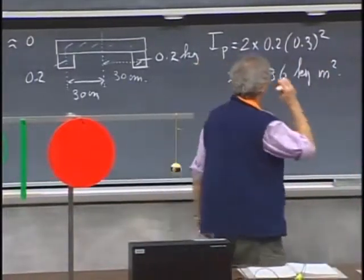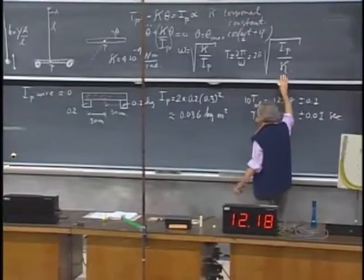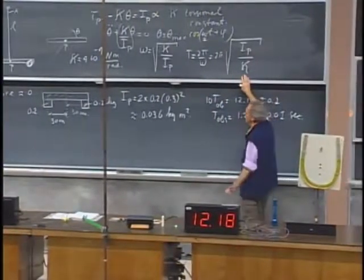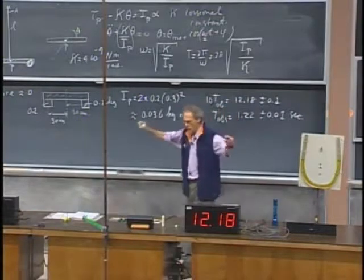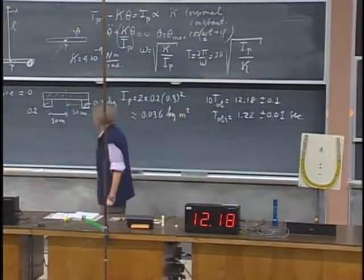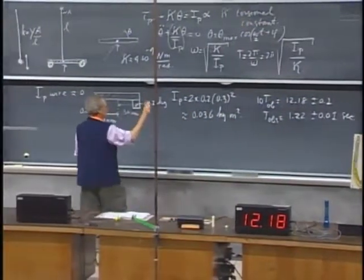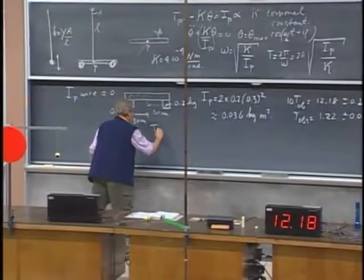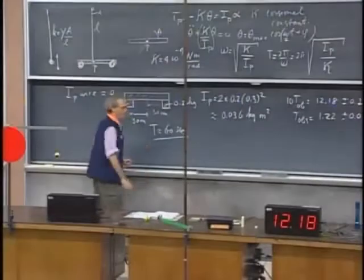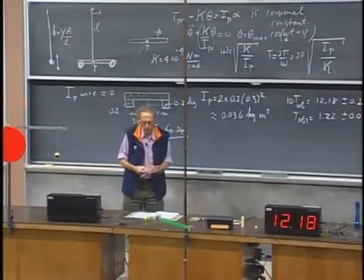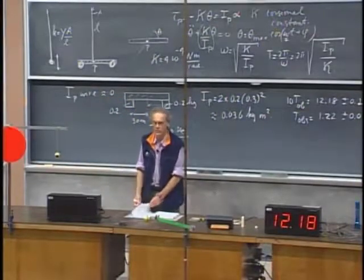And so when I use that into our equation, so I know now what kappa is, at least I have a reasonable idea what kappa is, and I know what I of P is, that's really almost exclusively determined by that crossbar, I will find then, using that equation, that the period is very close to 60 seconds.